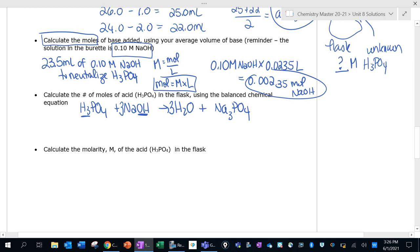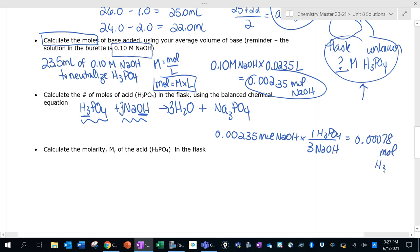Alright, and how does that help us? Well remember we're trying to find how much acid was in our flask. We know how much base it took to neutralize the acid - it took 0.00235 moles of base. Now we know the ratio in which they react. It looks like for every three NaOHs that react we will react one H3PO4, so that's a one to three ratio here. So that is how many moles of acid that were in the container.